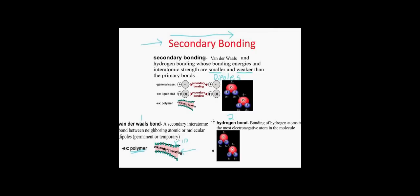The other type of secondary bonding is hydrogen bonding. Hydrogen bonding is defined as the bonding of hydrogen atoms to the most electronegative atom in the molecule, but this doesn't fully describe the intermolecular interactions. Here we have two water molecules: the hydrogens have a slightly positive charge and the oxygen has a slightly negative charge, but the separation between the partially positive and partially negative is much greater than in a normal temporary or permanent dipole — that's why it's classified as its own separate entity.